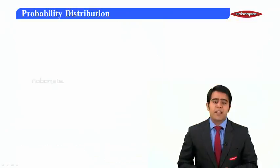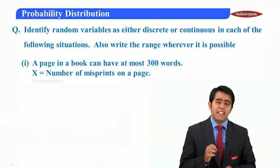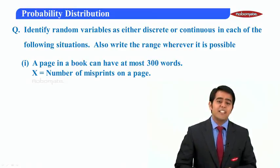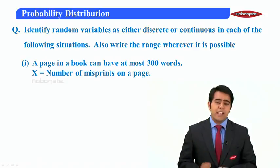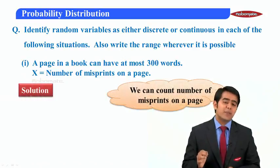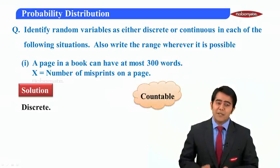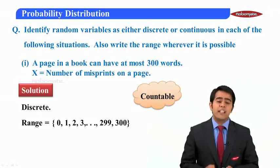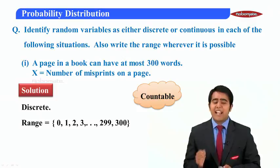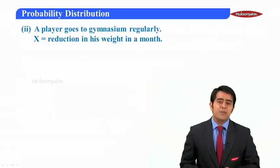Let us study further with examples. Identify random variables as either discrete or continuous, and write the range wherever possible. Question one: a page in a book can have at most 300 words; x is the number of misprints on a page. Since we can count misprints, x is a countable quantity, so it is a discrete random variable with range 0 to 300.